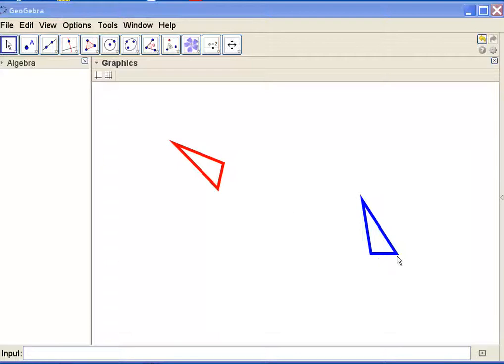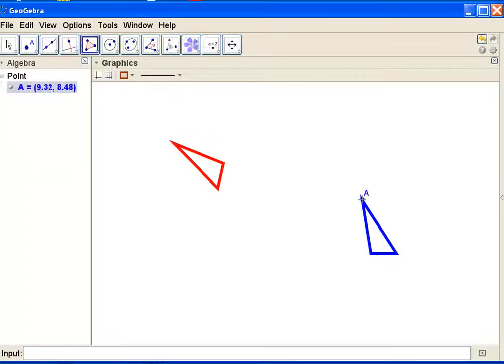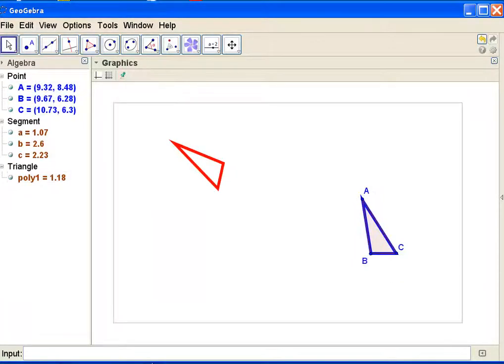First thing I need to do is label these so that I can talk about them. I'm going to use my polygon tool and I'm going to label this figure over here. I'm also going to label the other triangle.